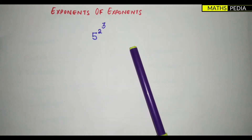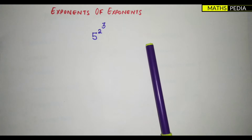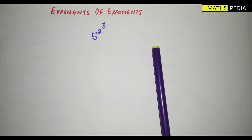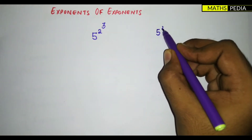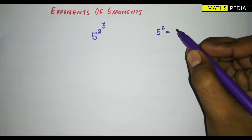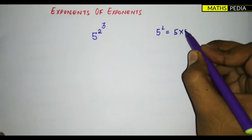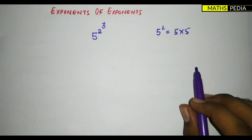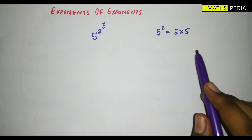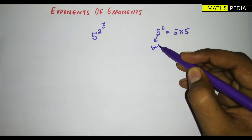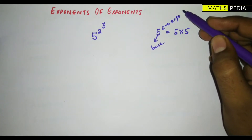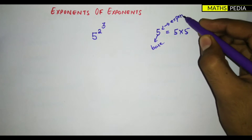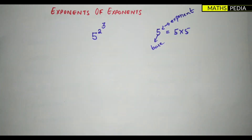First we need to understand what an exponent is. An exponent means there is one base. For example, take 5 squared — it basically means you have to multiply 5 two times. This is the base part, and this is what we call the exponent or power. Exponent and power are the same thing.